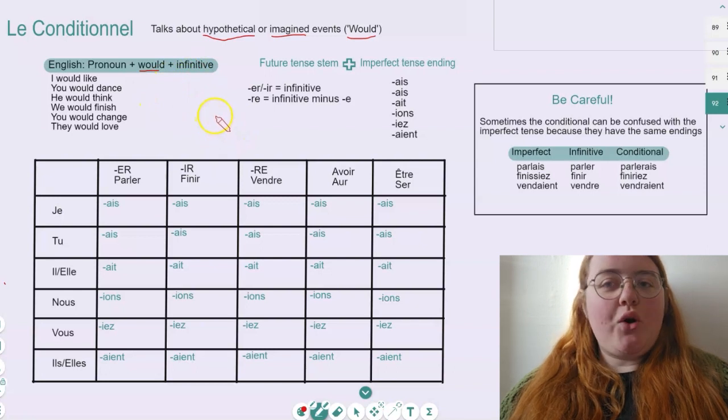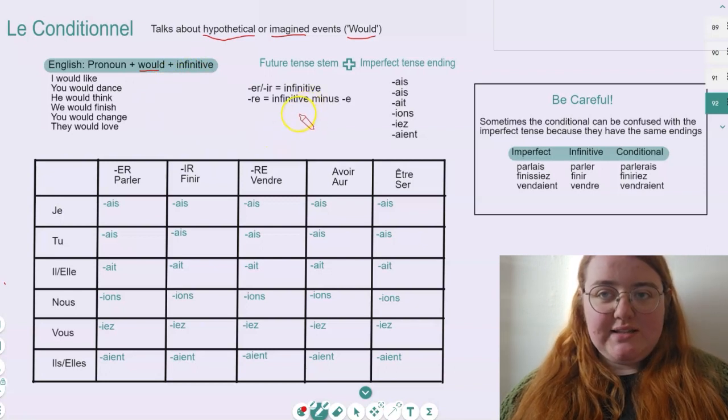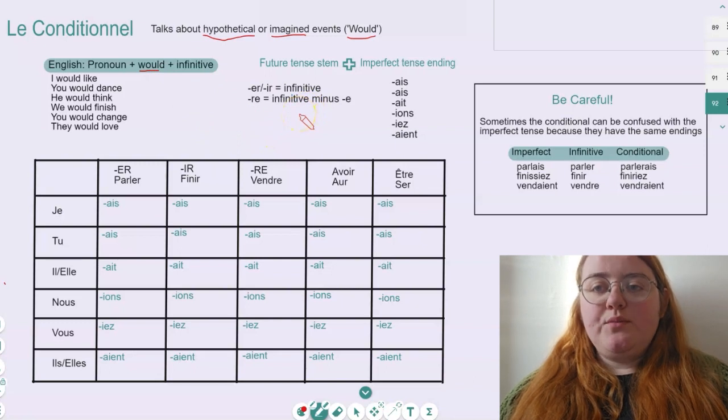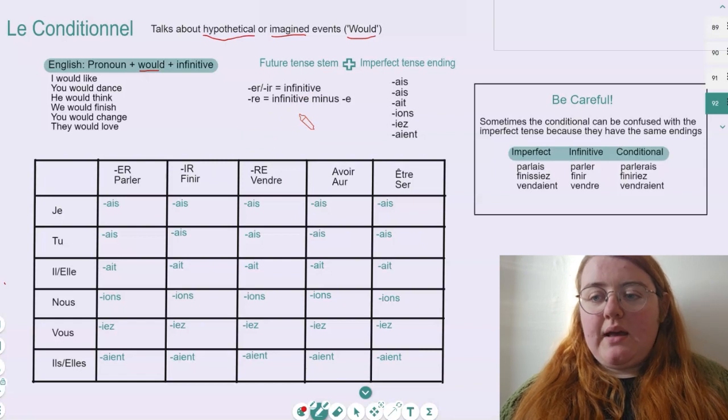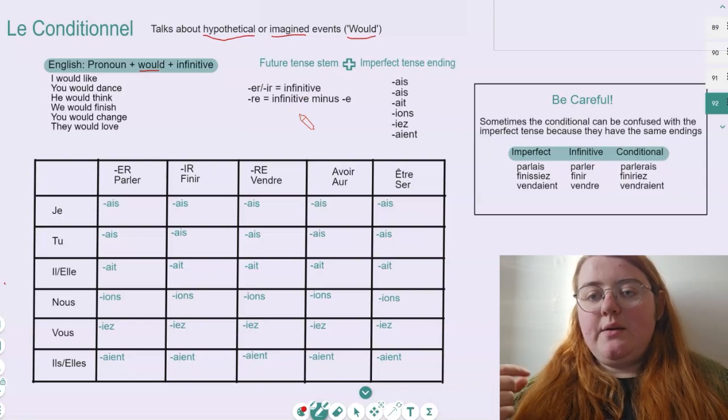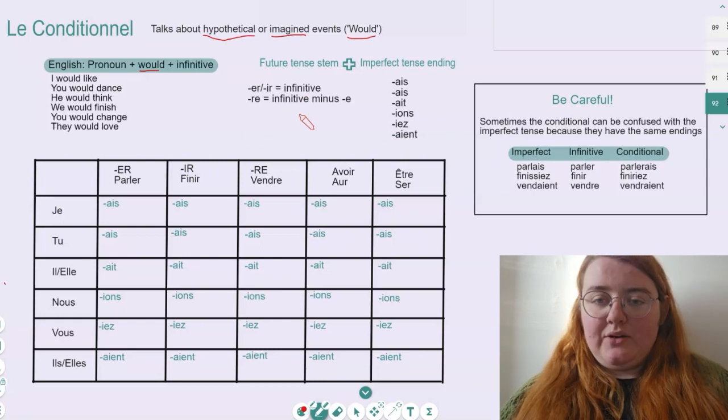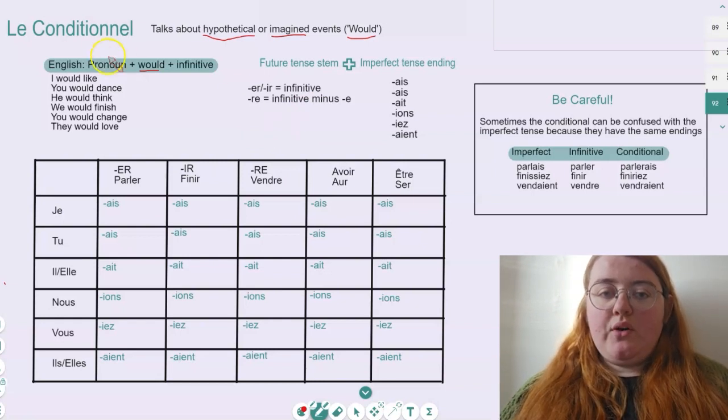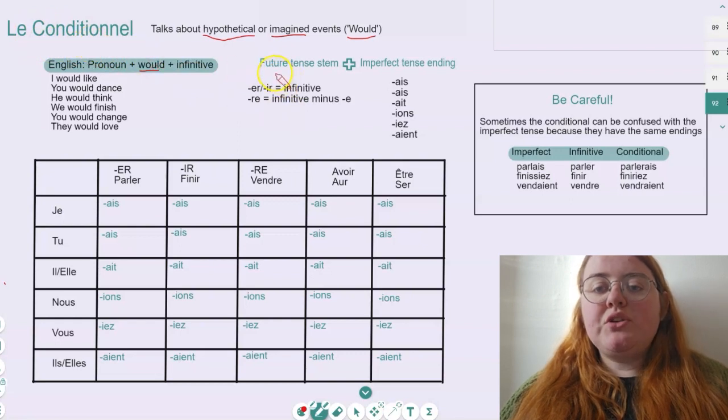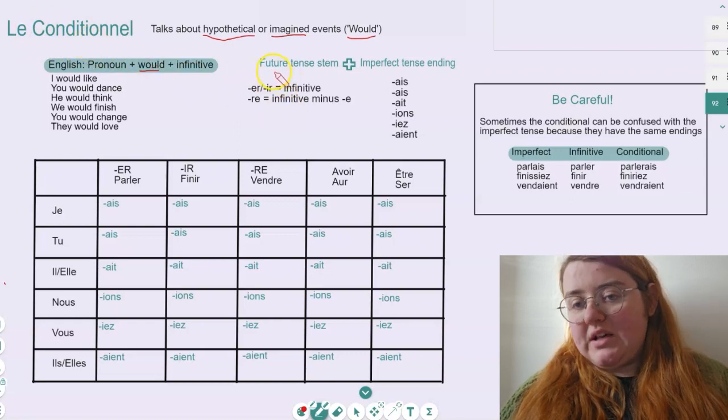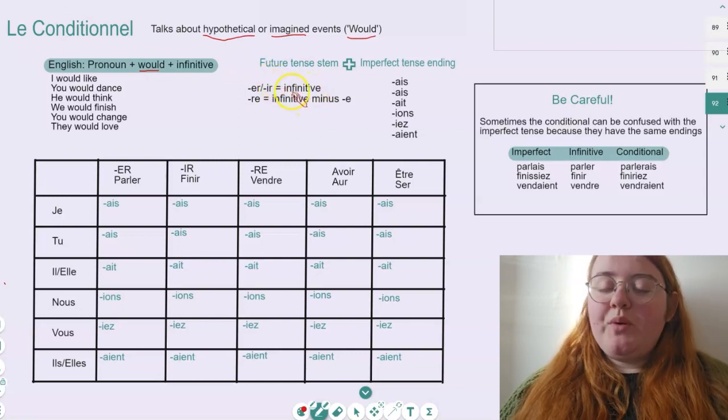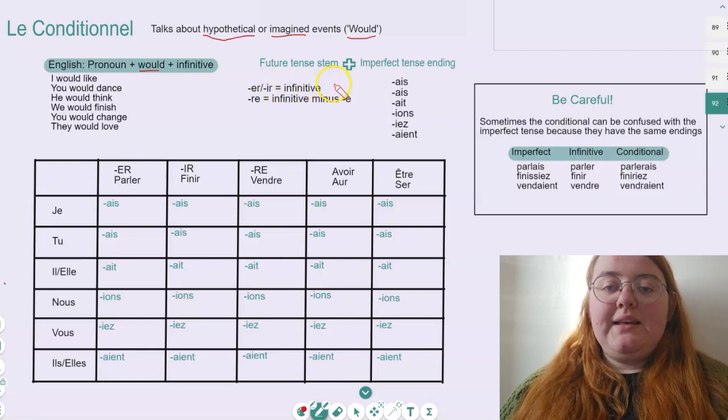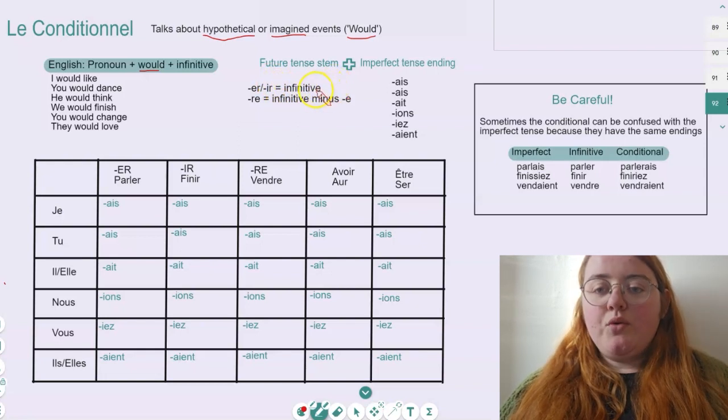So when it comes to conjugating the conditional tense in French, we want to keep two things in mind. The first thing we need to talk about is our stem. If we remember, the stem is the part of the verb that we then add the ending onto. When it comes to the conditional tense, we want to use the same stems that we use for the future tense. This is super easy for both verbs ending in ER and IR - we just use the infinitive. We don't change the base verb.